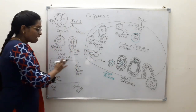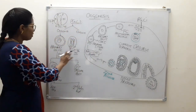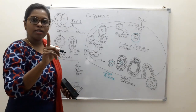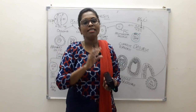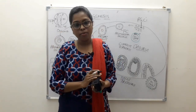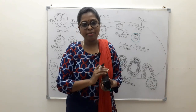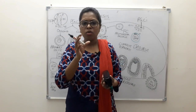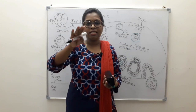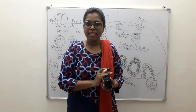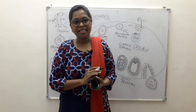Unlike spermatogenesis, where one primary spermatocyte gives rise to 4 spermatids, in oogenesis one primary oocyte gives rise to only 1 ovum and 2 polar bodies. This is because in the primary oocyte the nucleus is eccentrically placed due to deposition of a fatty lecithin-like substance called deutoplasm, which provides nourishment. Because of the eccentric nucleus, equal division does not occur, and thereby one primary oocyte gives rise to only one ovum. Thank you for watching today's video.